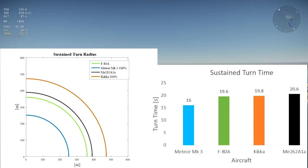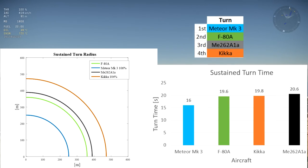Still, the Kika's turn radius remains too wide, so the ranking for the turn is as follows: Meteor, F-80, ME262, Kika.